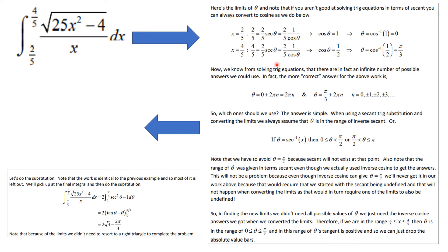When x = 4/5 (the upper limit), we solve 4/5 = (2/5) sec θ, giving cos θ = 1/2, so θ = arccos(1/2) = π/3. We stay away from π/2 because the secant is undefined there. With limits now from 0 to π/3, we plug in directly without needing to go back to the original substitution. The exact answer is 2√3 - (2/3)π.